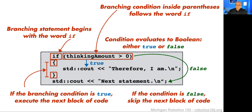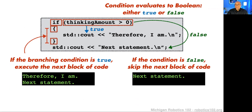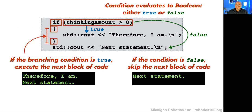For false, we just move on to the next statement. Looking at this code: if thinking_amount is greater than zero, which would make this condition true, then we're going to output 'therefore I am,' which is inside the braces. We're also going to continue and output the next statement. But if our condition is false — thinking_amount is zero or less — then we're only going to get to the next statement and skip 'therefore I am.' That is the basics of how the if statement works.